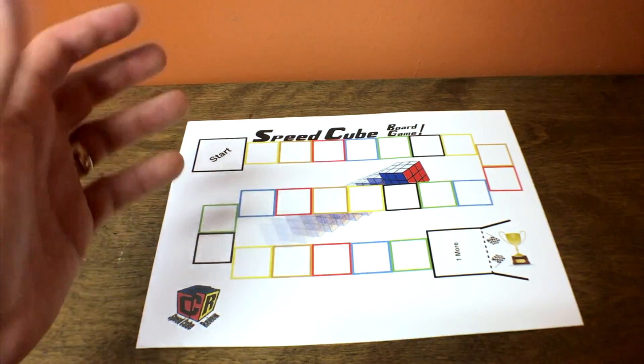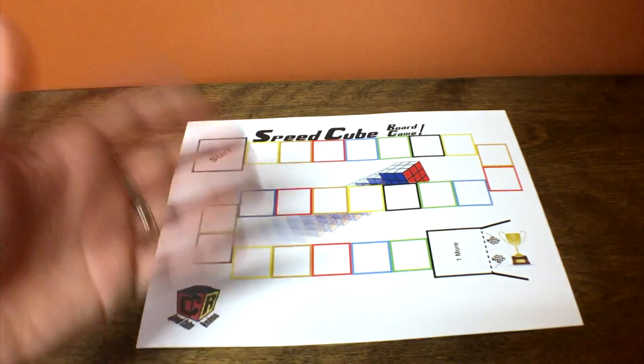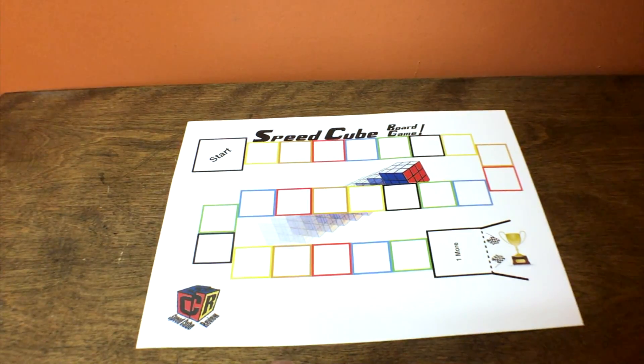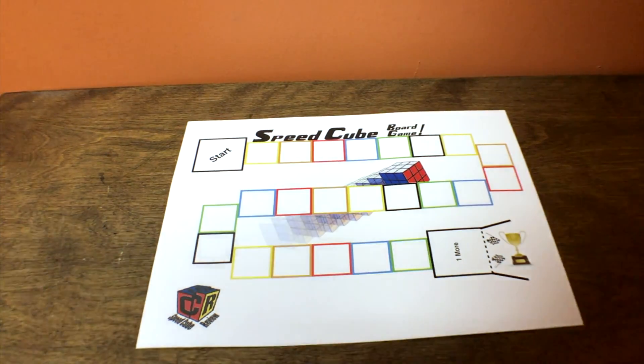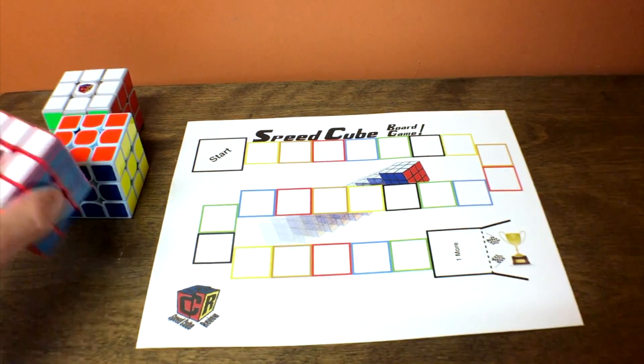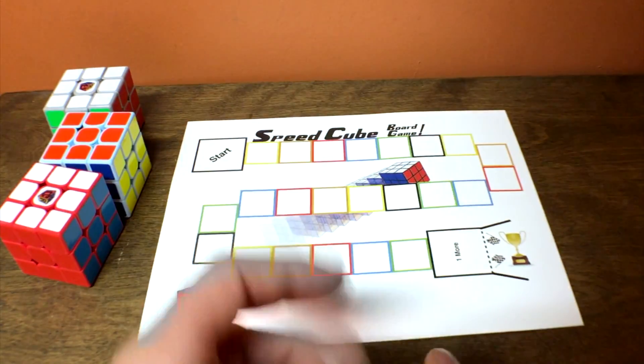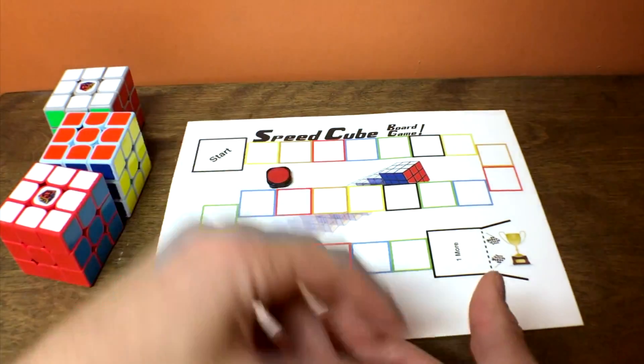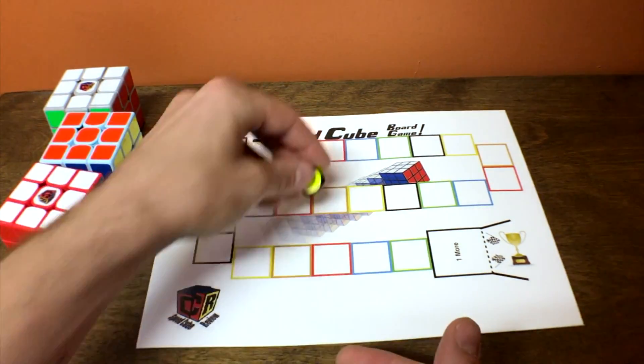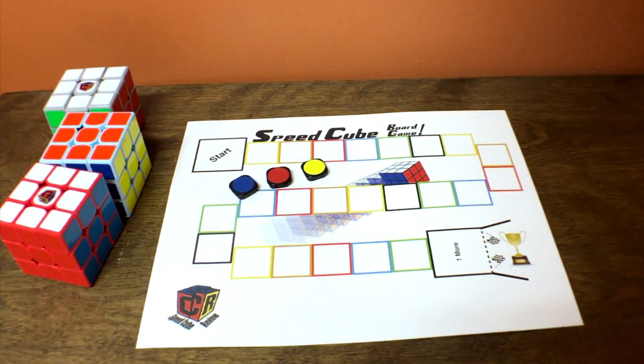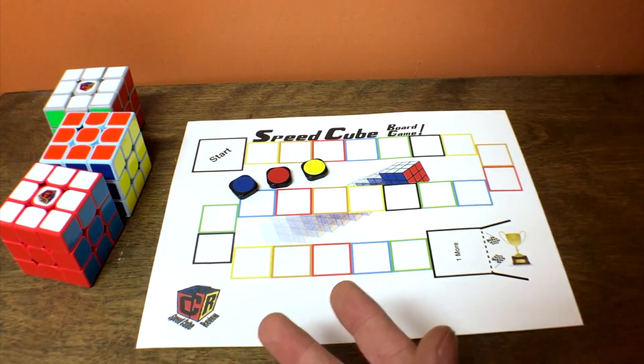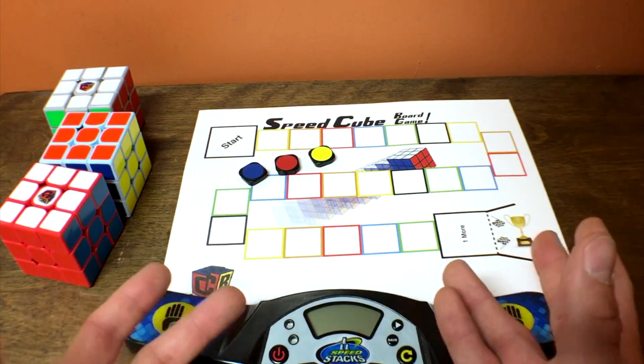Now what you need is, the board or not, a few cubes. So you can use two cubes or more. So I've got three here. Something to mark your place on the board. So I'm going to use some old caps from the GAN 356 version 1. And a timing device. So you can use a phone or a timer. And that's it.